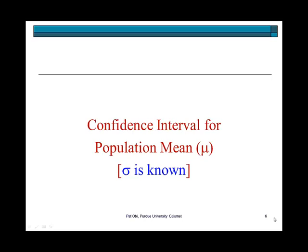In this section, I show how to calculate the confidence interval estimation for the population mean mu, in the case where the population standard deviation sigma is known.